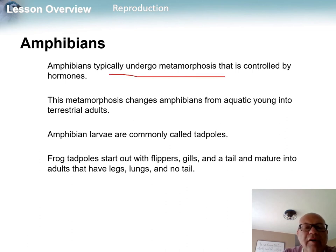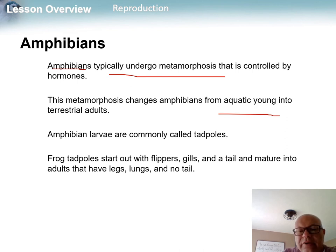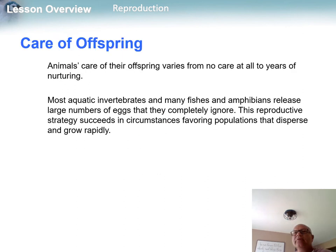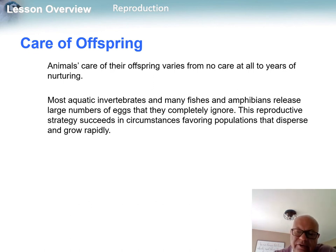In vertebrates, amphibians also undergo metamorphosis. They start as an egg, and their larval stage is called a tadpole. Tadpoles still retain some embryonic characteristics but then start to change and look more like the adult.